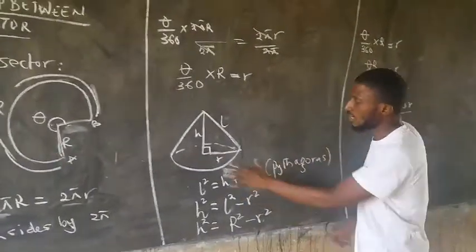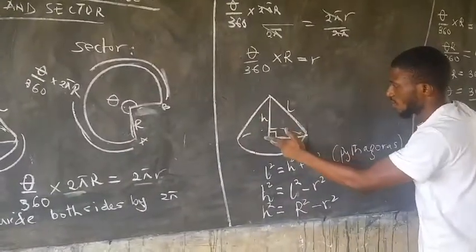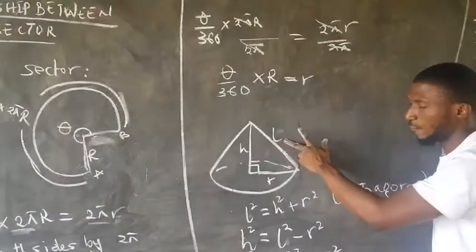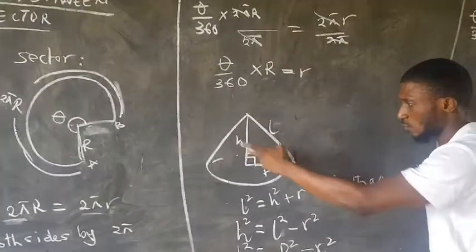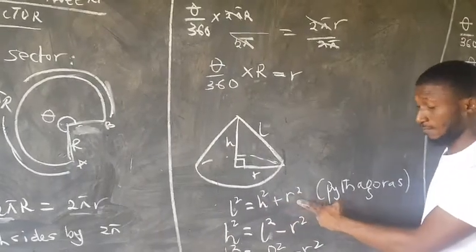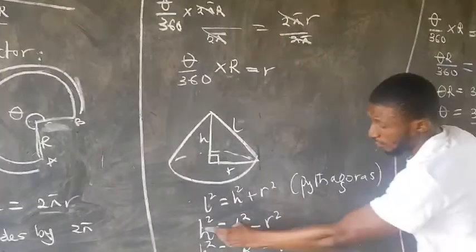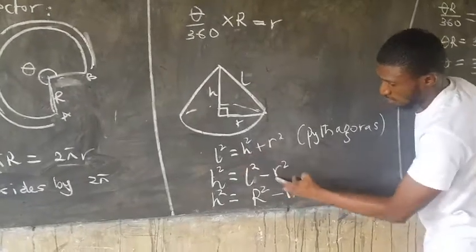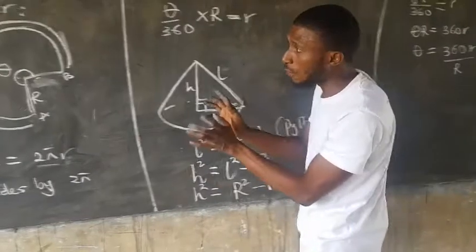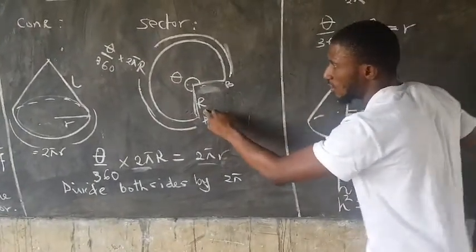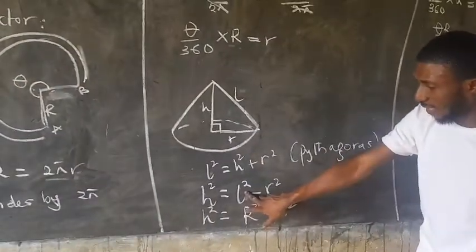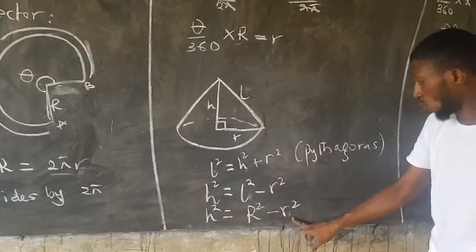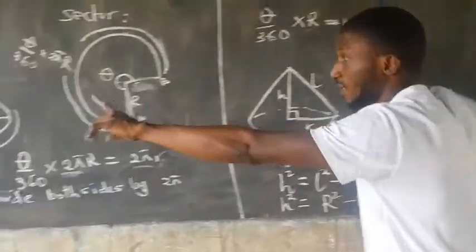For the perpendicular height: join the perpendicular height to the base radius of the cone, with slant height l. From Pythagoras' theorem, l² = h² + r². Rearranging: h² = l² − r². Since the sector radius equals the slant height, replace l with R, giving h² = R² − r². For theta: from θ/360 × R = r, cross-multiplying and making theta the subject gives θ = 360r/R.